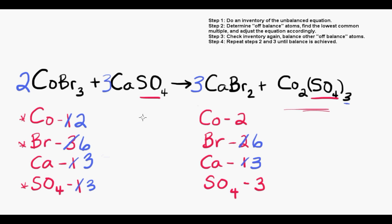Good work, everybody. We've successfully balanced a more complex chemical equation, and we've also discovered another balancing tip, which is to keep your polyatomic ions intact if they exist on the left and right side of the chemical equation. This will make your inventory less complicated.